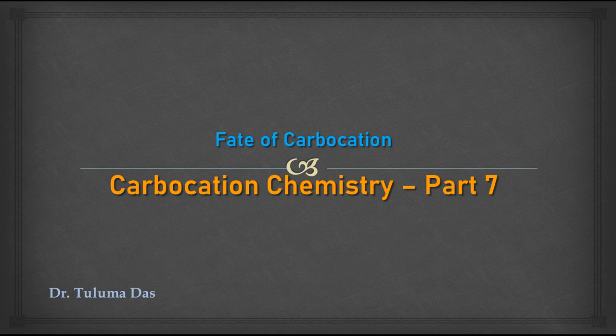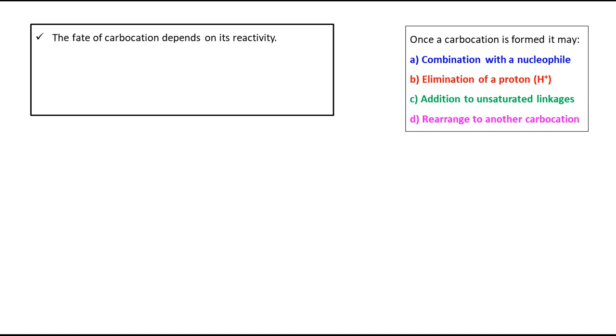Hello everyone, this is part 7 of carbocation chemistry. In all the previous parts I have discussed classification, structure, types, stabilization, stability factors, problems, and generation. Now in this video, which will be a very short video, we will see the fate of carbocation — that means once the carbocation is generated, what are the different possibilities we can expect. The fate of carbocation depends on its reactivity, whether it is stable or not stable, and also on the structure.